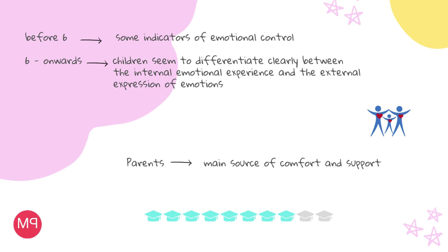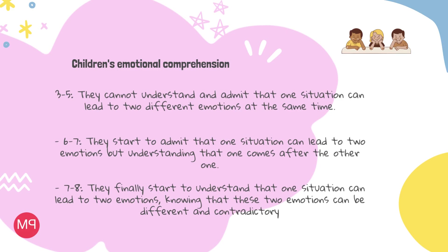Moreover, as Pedro Gallardo also explains, when children are feeling negative emotions until they are six to seven years old, their main source of comfort and support are their parents. He also divides children's emotional comprehension into three groups depending on their ages. The first group, from three to five years, cannot understand that one situation can lead to two different emotions at the same time. The next group, from six to seven years, starts to admit that one situation can lead to two emotions, but understands that one comes after the other. The third group, from seven to eight years, finally starts to understand that one situation can lead to two emotions that can be different and contrary.